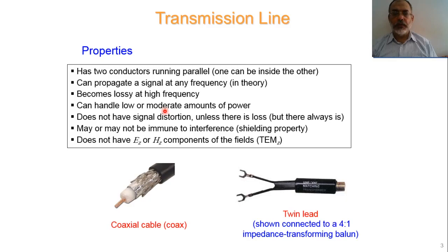Low or moderate power means about 1 watt, 10 watts, maybe 100 watts. But if we are talking about kilowatts, transmission lines will not be suitable. In this case, waveguides would be more suitable for kilowatt and megawatt applications.